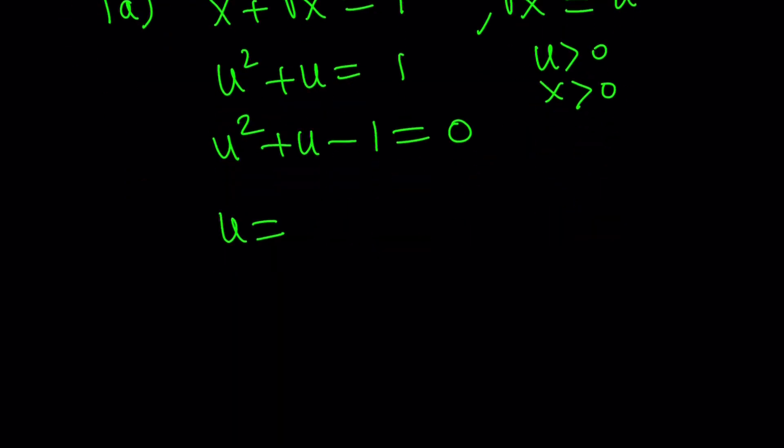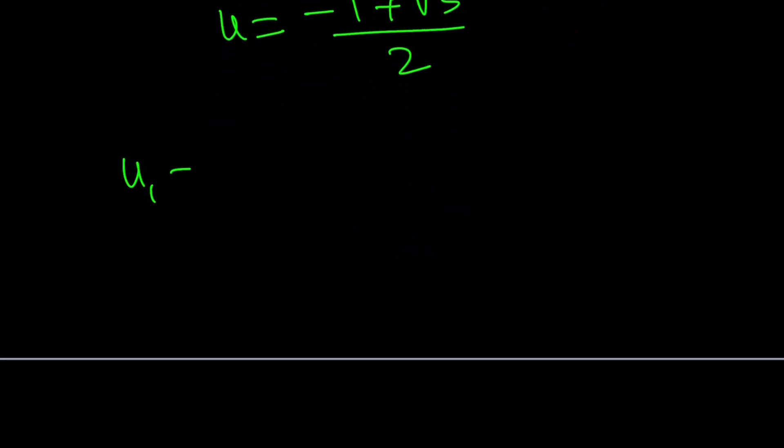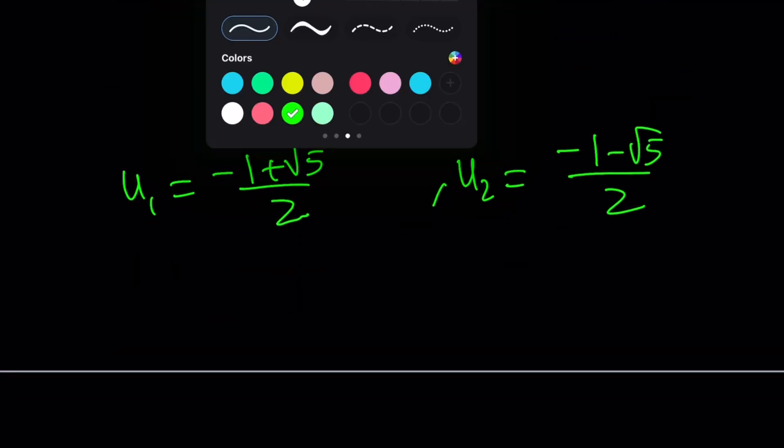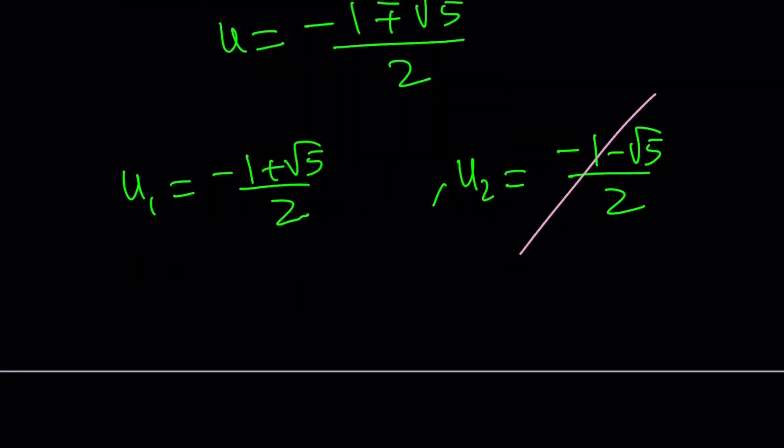So from u, u becomes what? Negative 1 plus minus the square root of 5 over 2. There are two solutions, obviously. And one of them is negative 1 plus root 5 over 2. Let's call it u sub 1. And u sub 2, negative 1 minus root 5 over 2. But remember what we said about u. Not about u. It's the letter u. But if it's your birthday, happy birthday to you. We said that u is positive. So we're not going to be able to take, unfortunately. Sorry, u. Sorry, we've got to let you go.